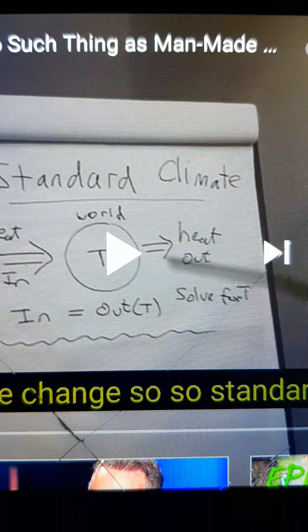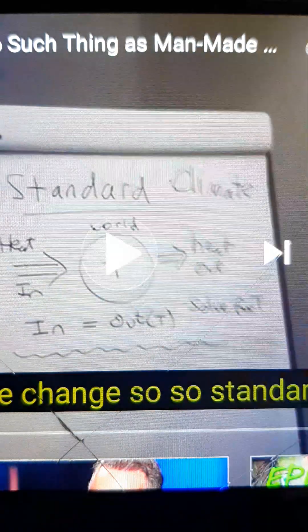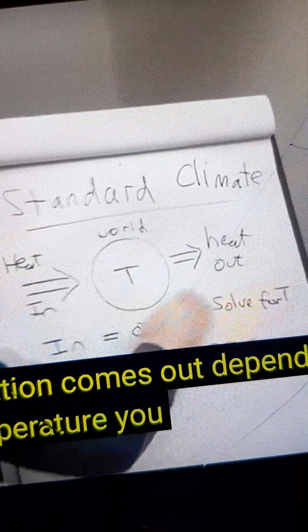So to start out a presentation like this, it's all bad. But let's see. Heat in, world, heat out. And you just have some equations. I mean, obviously, they're about reflectivity and lots of stuff. But you basically say in equals out. And the out, how much radiation comes out depends on the surface temperature. You solve it for T.